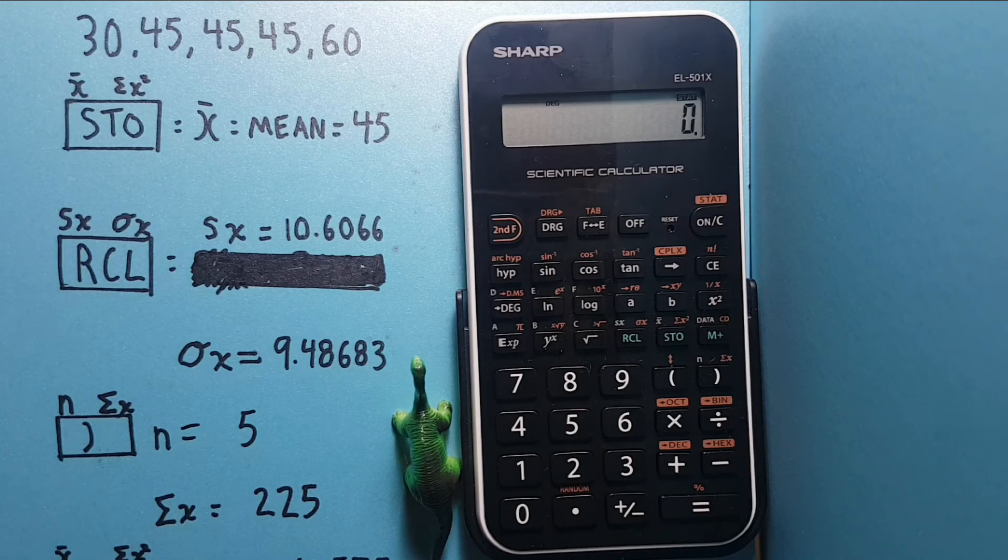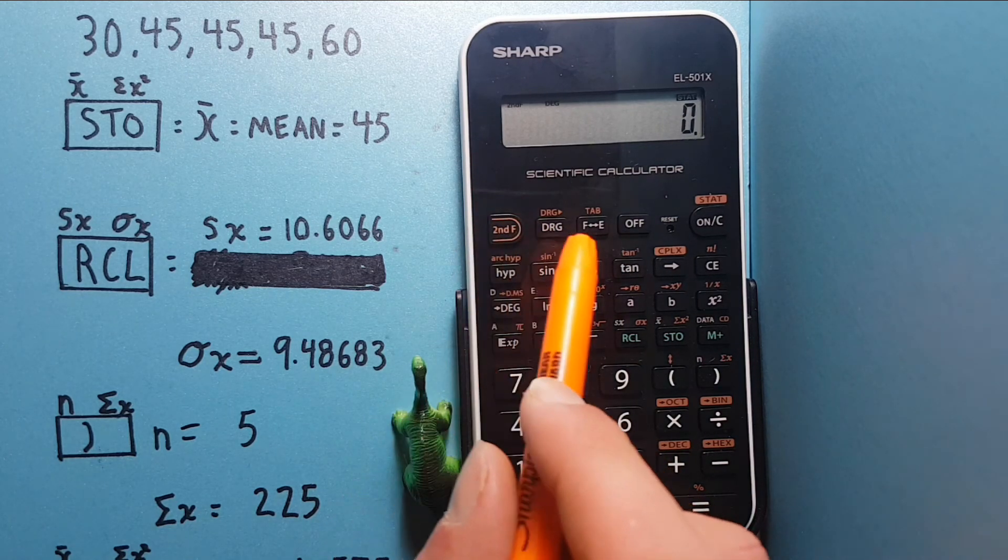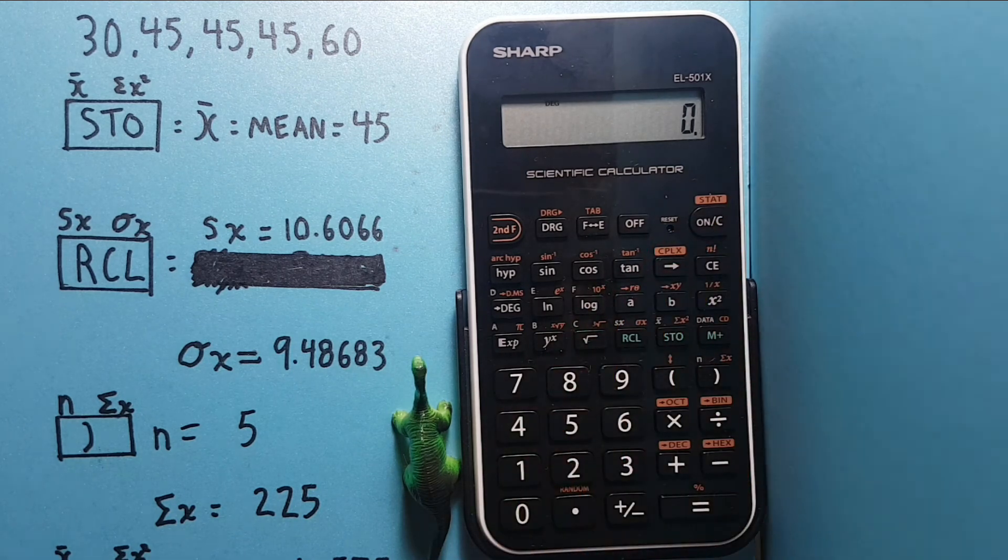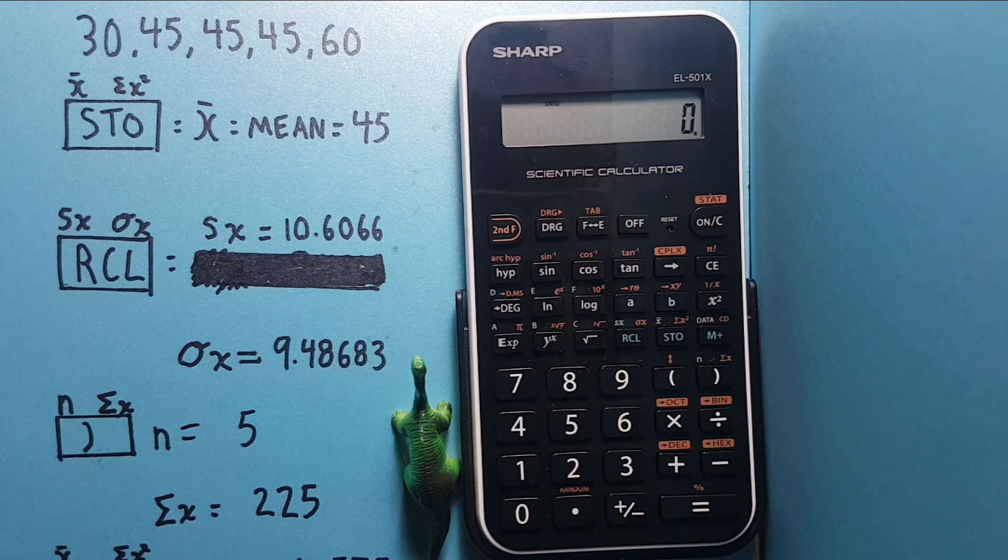And if you want to return to our regular calculator mode, we would go second function on, and you can see the word stat is no longer in the upper right-hand side of the screen, so we're back to our regular calculator mode.